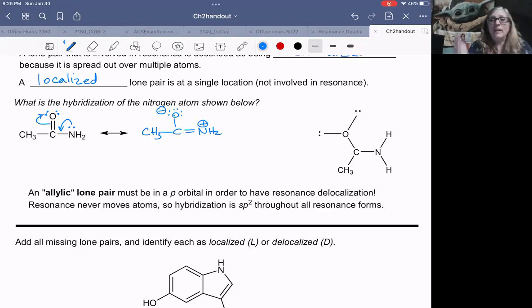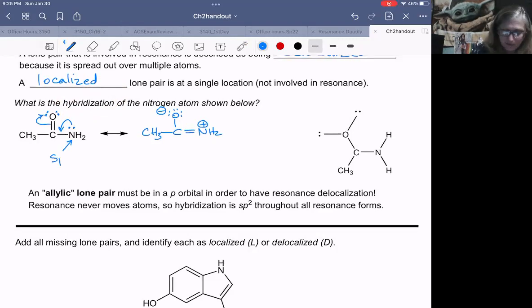Knowing that these two resonance forms exist, the question is, what is the hybridization of that nitrogen atom? In this Lewis structure, it's got four regions of electron density, has three bonds and a lone pair, so it would be sp3 hybridized. But when we look at it in this Lewis structure, this nitrogen actually has three regions of electron density, and so it must be sp2 hybridized.